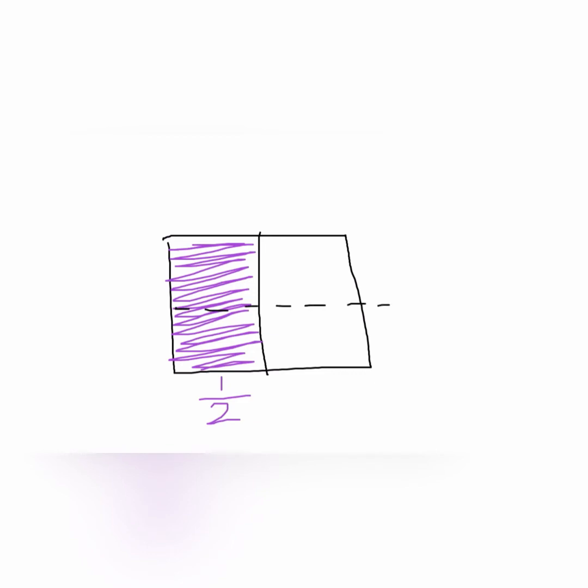Take a look at our area model now. What happened to the fractional units? The units got smaller. And what happened to the number of units? Well, we started off with two pieces and now we have four parts. So we have double the number of units.